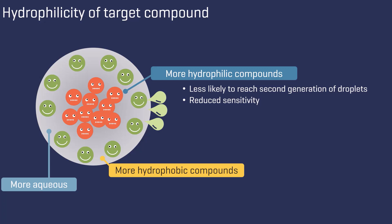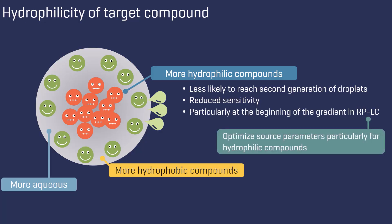This can be particularly pronounced at the beginning of the gradient in reversed-phase liquid chromatography, especially if the source parameters are not optimized for hydrophilic compounds.